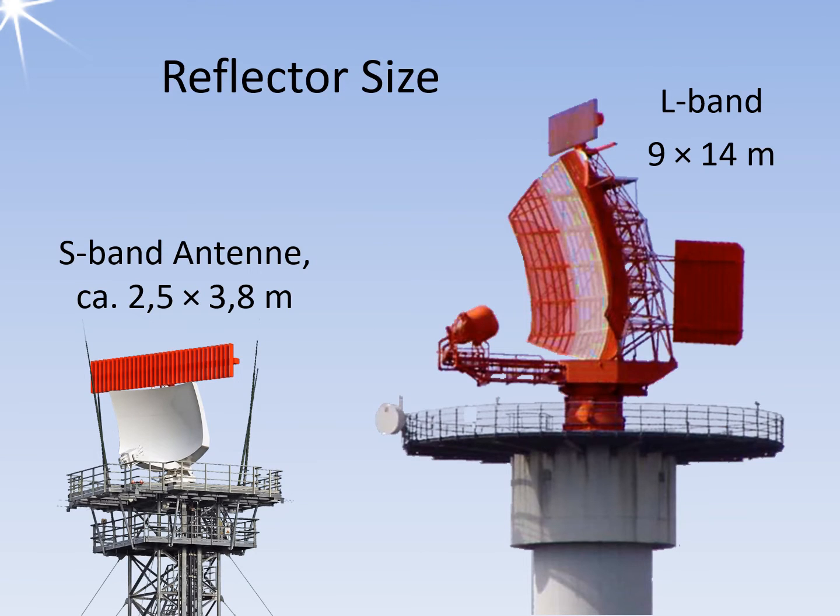When it comes to directivity and antenna gain, the S-band antenna of a terminal area radar can be significantly smaller and lighter compared to an enroute radar operating in the L-band. It is important to note that the values mentioned here only refer to the passive reflector, also known as the secondary radiator. The primary radiator, on the other hand, is a smaller antenna element located at the focal point of the parabolic reflector.